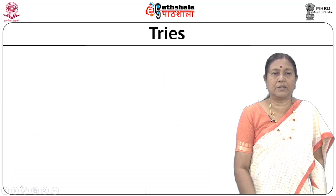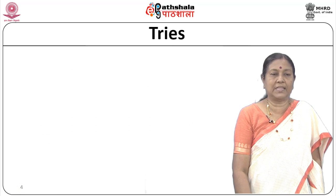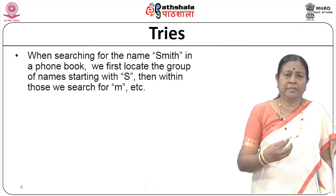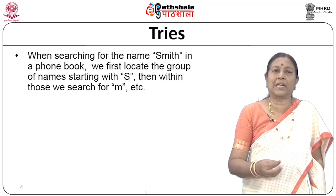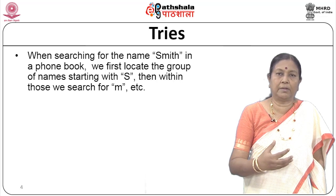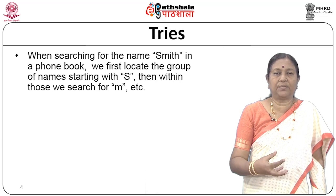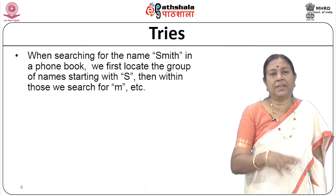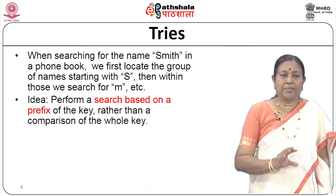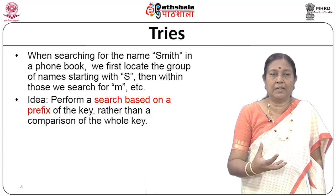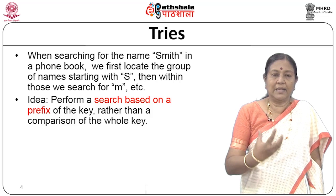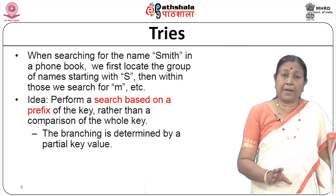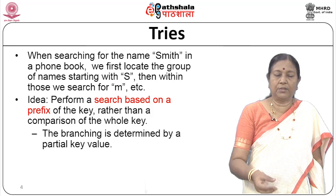Let us look at some background. When searching for a name like 'Smith' in a phone book, we first locate names starting with 'S', then those with 'M' after 'S', then 'I' after 'SM', and so on. This is the property we use in tries. The idea is to perform a search based on the prefix of the key rather than the complete key. The branching is determined by a partial key value — a prefix — not the complete key.